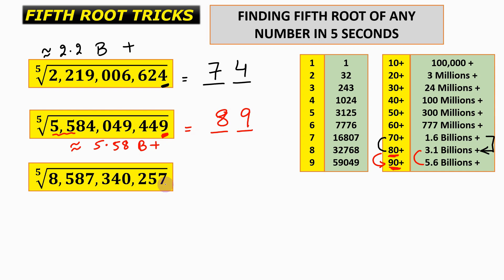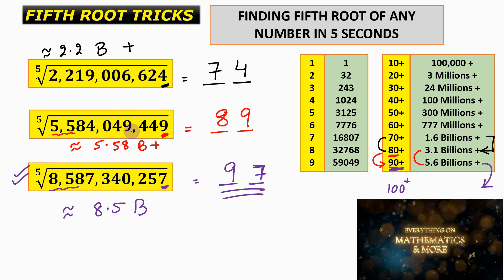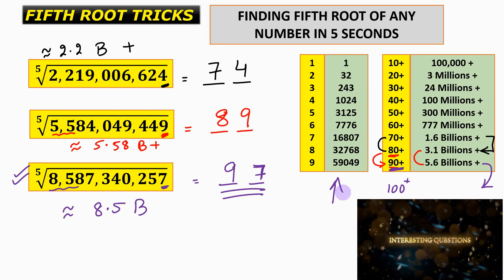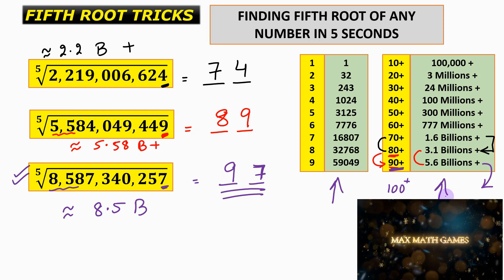Lastly, the unit place is 7. This number is approximately 8.5 billion, which lies between 5.6 billion and the next range, so the tens digit is 9 and the fifth root is 97. You can easily solve these questions in 5 seconds — the only trick is to understand the concept and remember the table. I hope you have understood everything taught in this video. Thank you.